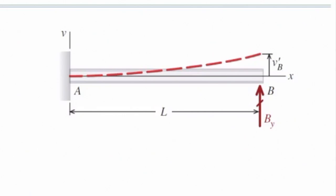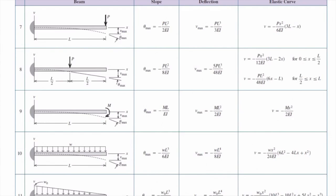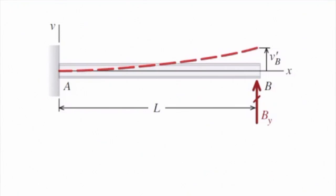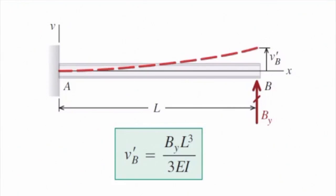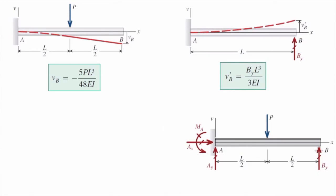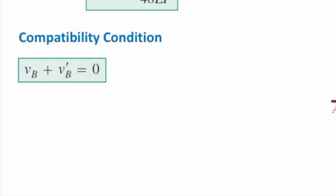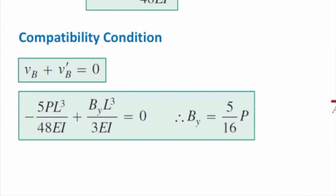For the second case — a cantilever beam subjected to a load at the right end — the deformation at that point from the table is PL³ over 3EI. So the deformation for that case is B-y · L³ over 3EI. The compatibility condition gives delta B plus delta'B equals zero. Plugging in the values, I get the reaction force B-y equal to 5/16 · P. Once you determine that reaction force, the remaining unknowns can be found using equilibrium equations.